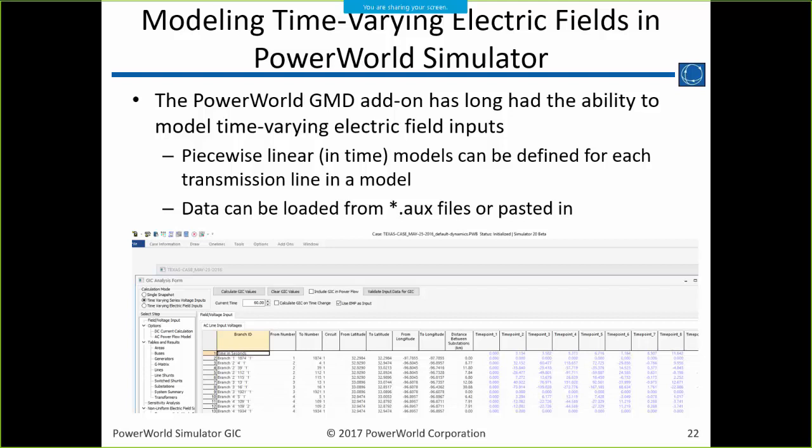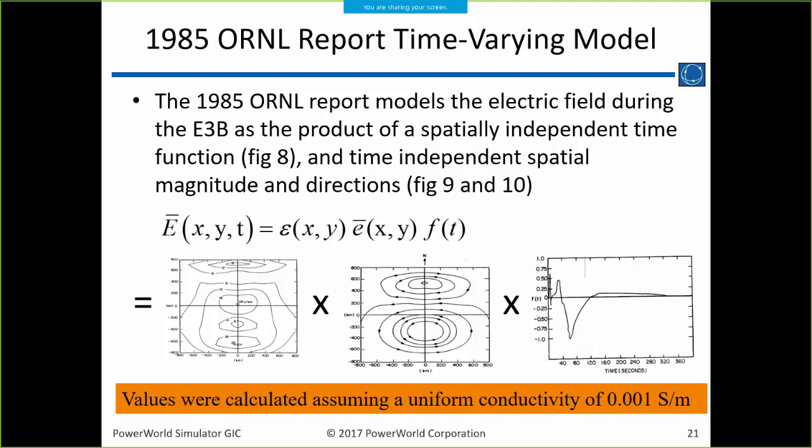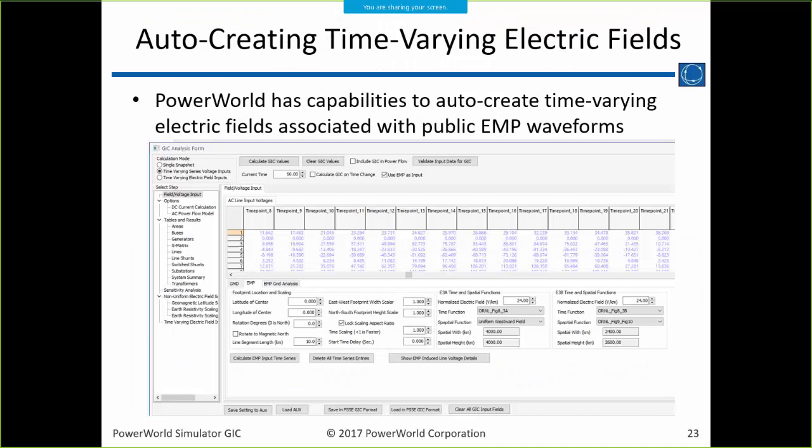Each transmission line can have a piecewise linear model defined for the electric field. You can load it from an OCT file or paste it in. So if you had code to model this, you could paste it right into PowerWorld. We then asked: can't we auto-create that in PowerWorld? The answer is yes — PowerWorld now has capabilities to auto-create time-varying electric fields associated with public EMP waveforms. Push of a button and you can generate this.